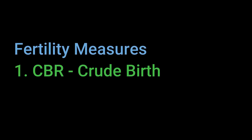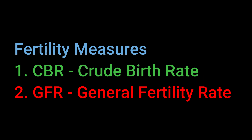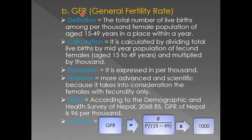Welcome to this class. Last time we talked about CBR — we were talking about fertility measures and we finished the first measure, that is CBR, crude birth rate. Today we are going to read about GFR, that is general fertility rate. You have already learned about CBR in detail, so before you read about GFR, you must be clear about CBR. If you have not watched the previous video, please do so.